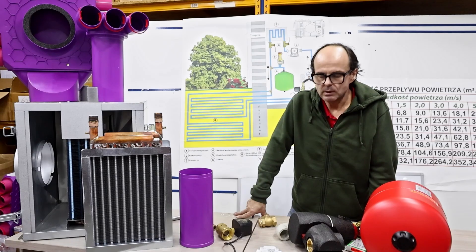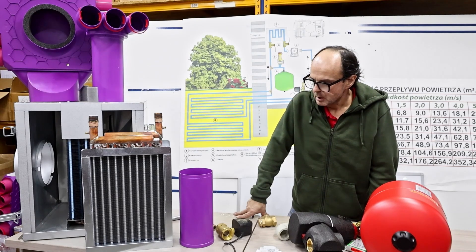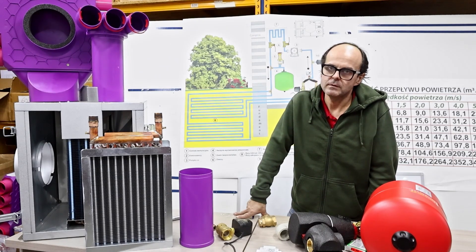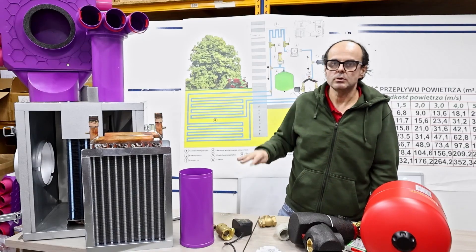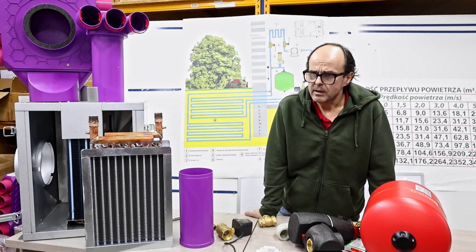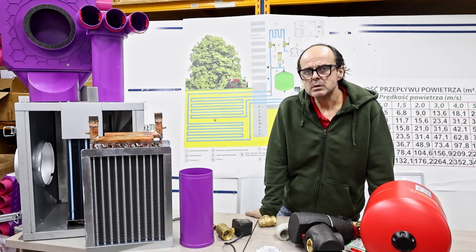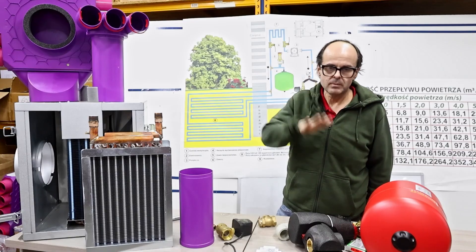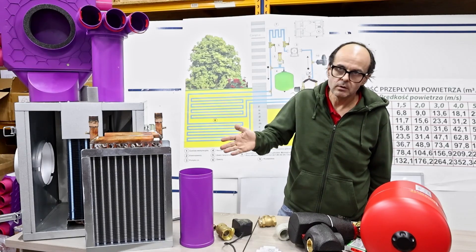An ordinary exchanger, if it operates in the ground, our source will run out after two, three, four hours. It will lose its parameters. When it does, then you set the controller to turn it off for two hours, then turn it on again for two hours, and so on.